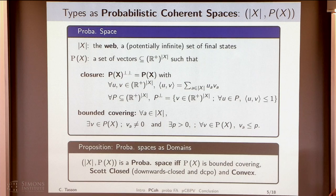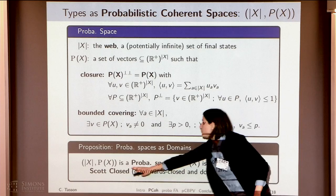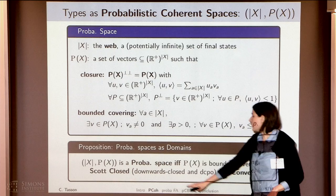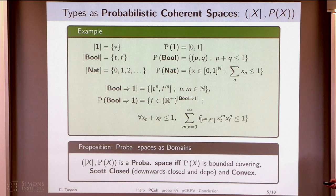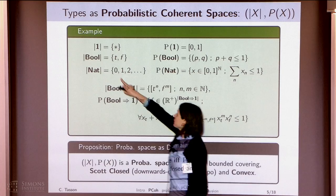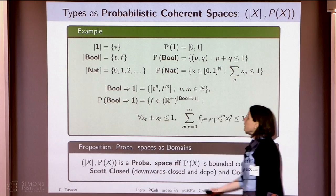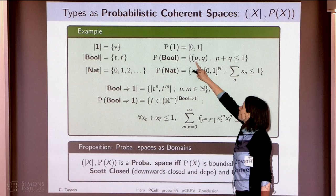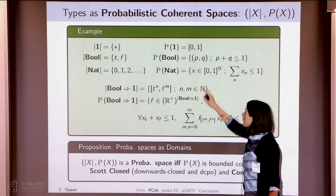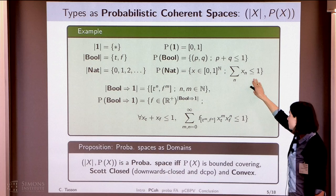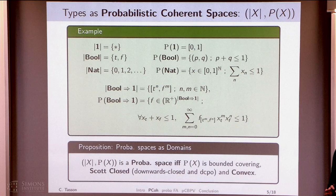You have a probabilistic space if and only if you have this technical condition and a convex domain. Let's look at some examples. For interpreting the unit type, you will have just one index and the probabilistic space will be all the segments. For Bool, you will have two indices and the probabilistic spaces will be pairs, where p is the probability of getting true and q is the probability of getting false. For Nat, you will have the sub-probability distributions. At base types, you really have an intuition that follows probabilities.